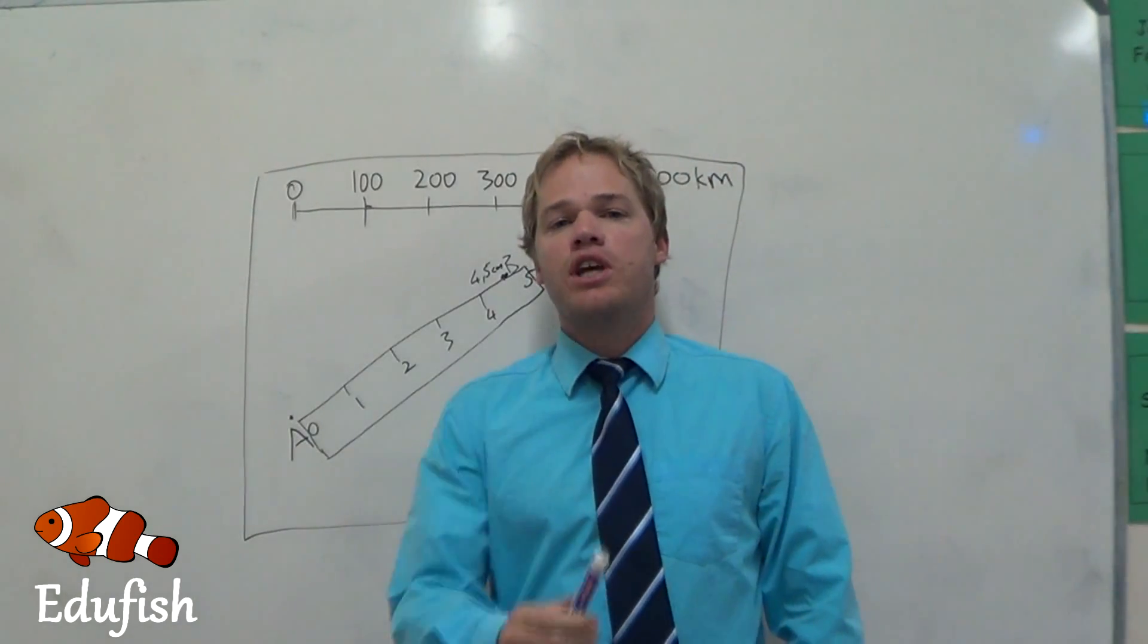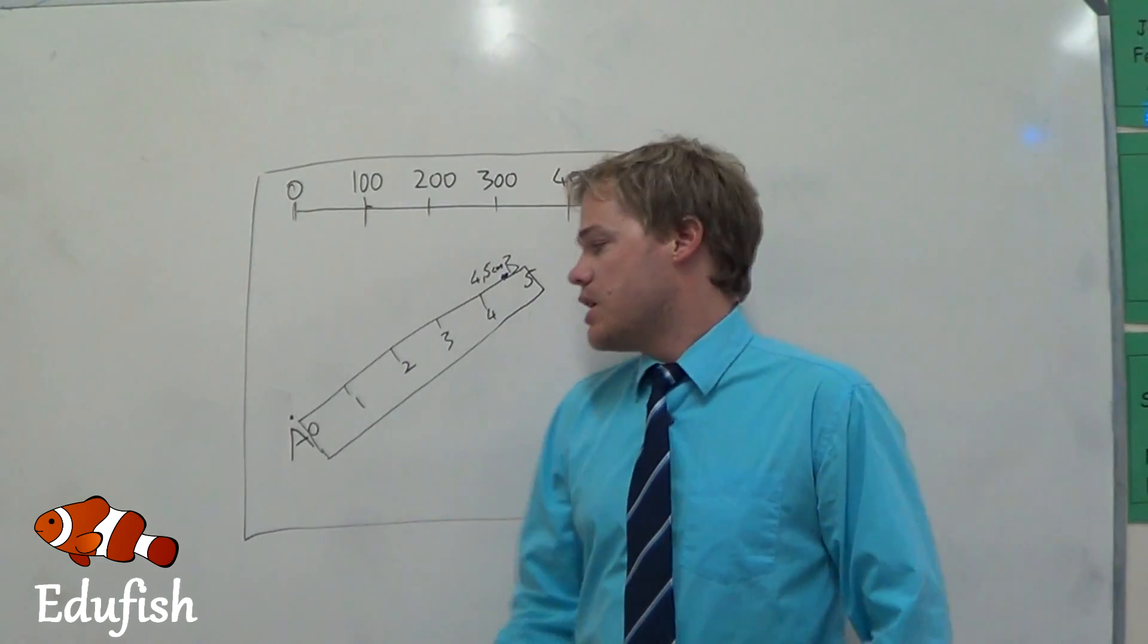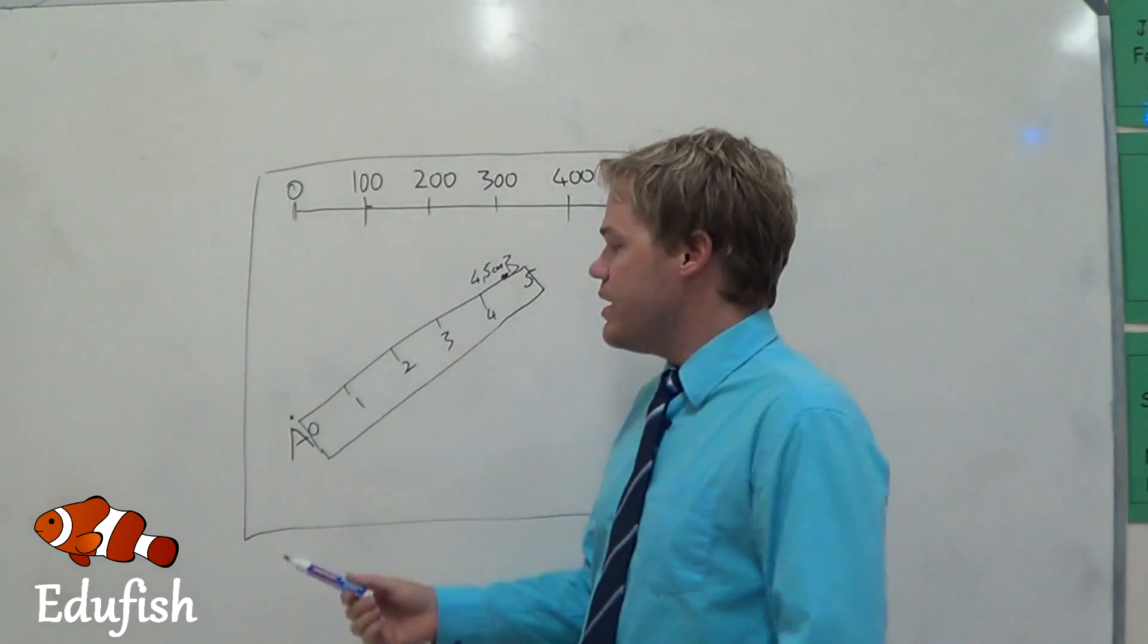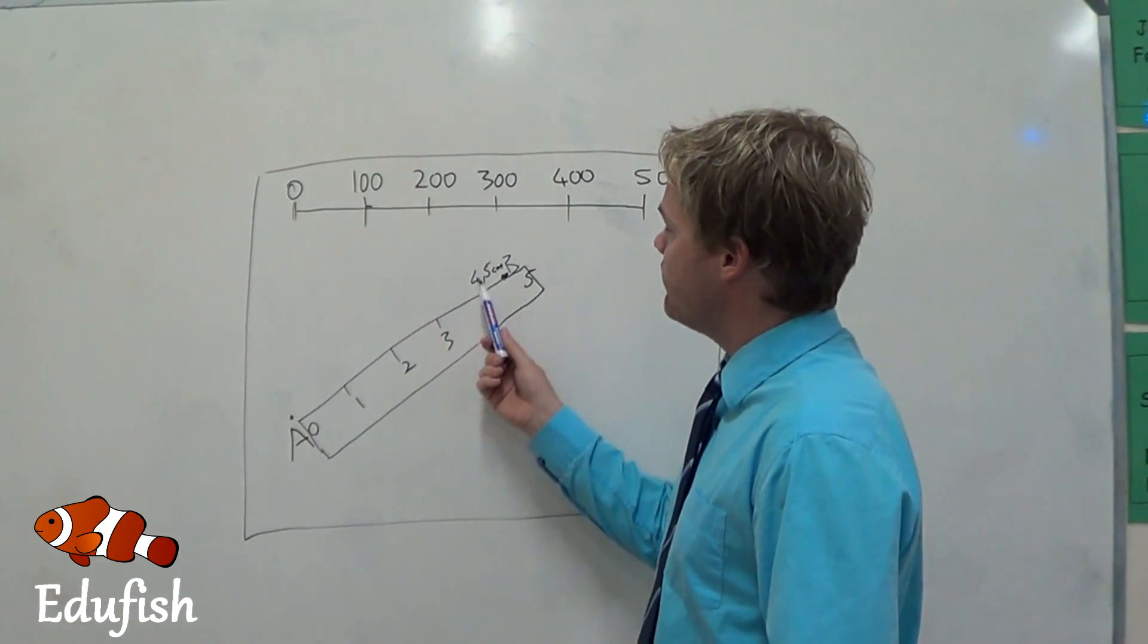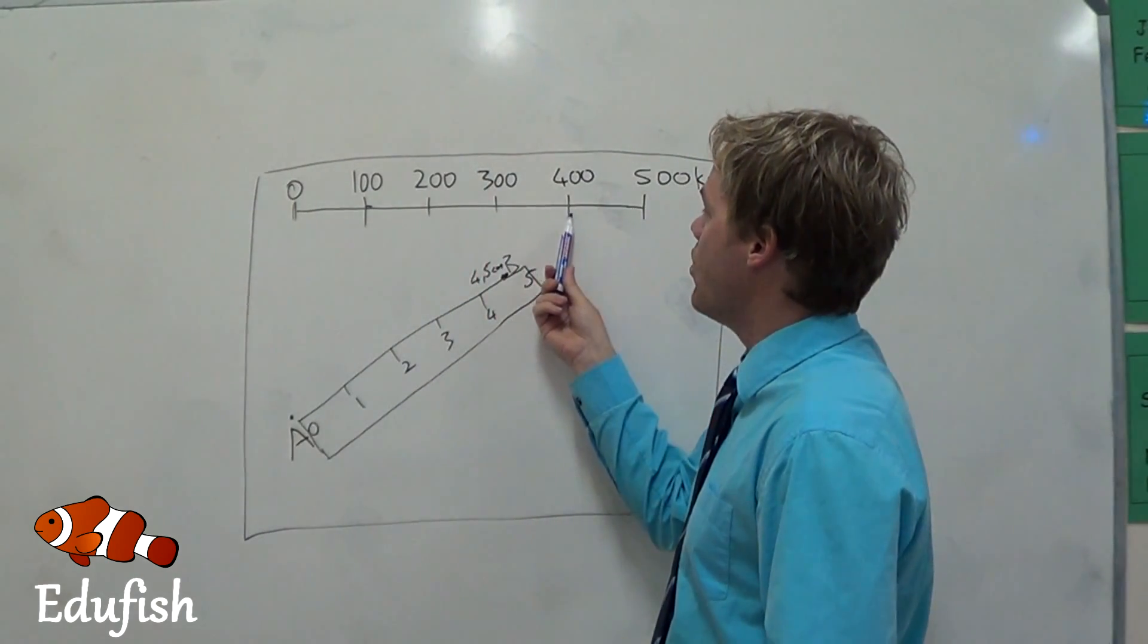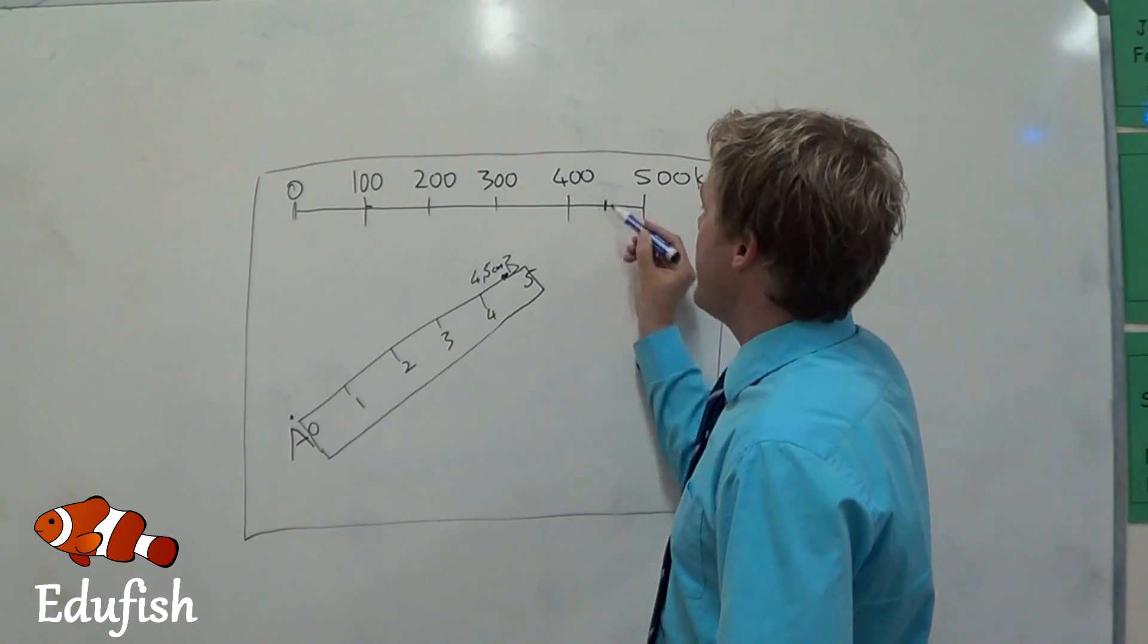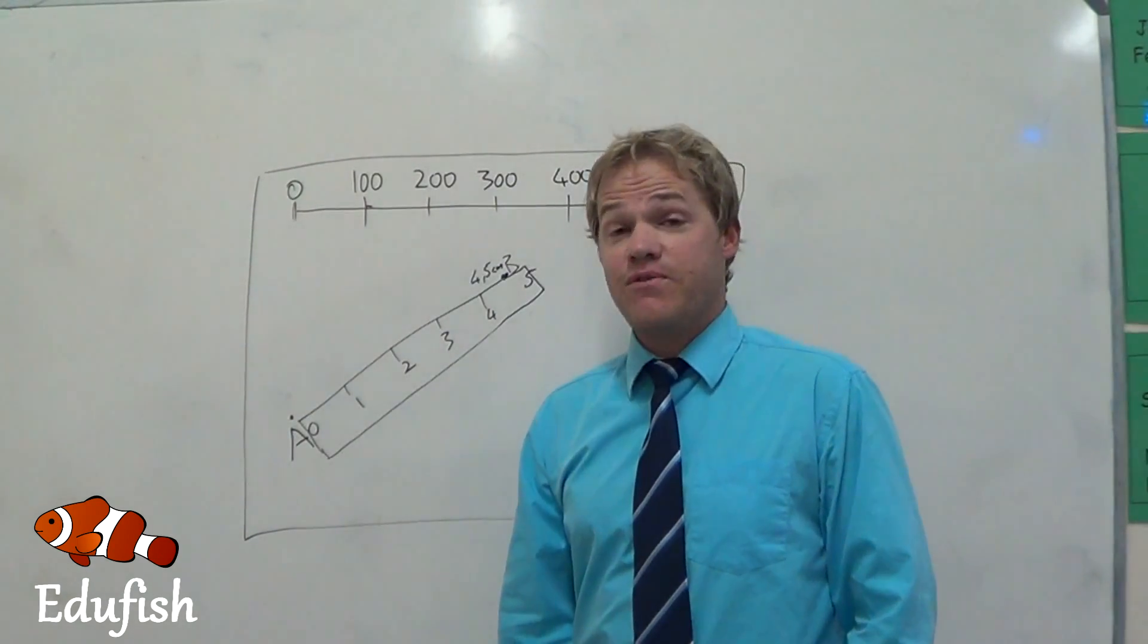If your teacher asks you to calculate the distance or to find the real distance between point A and point B, then you simply measure it. And then you go and look on the scale. Okay, so I've got 4.5 centimeters, then this is 1 centimeter, 2 centimeters, 3 centimeters, 4. But we measured 4.5, so it must be halfway in between.